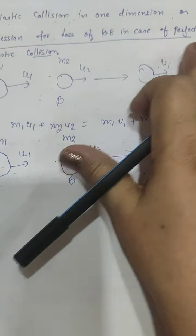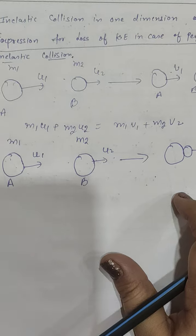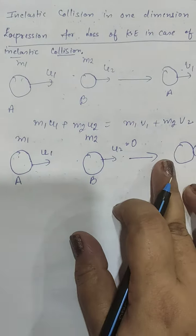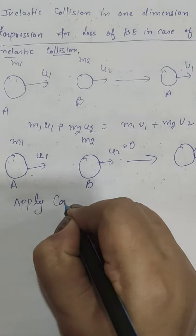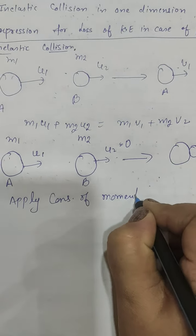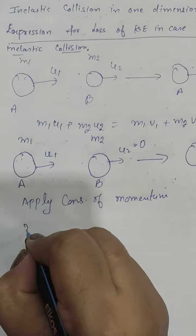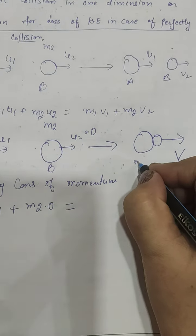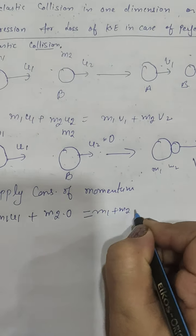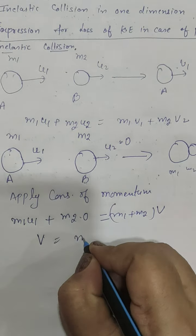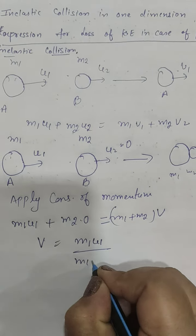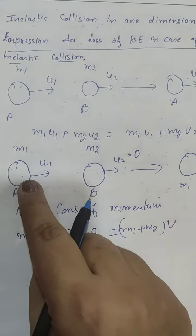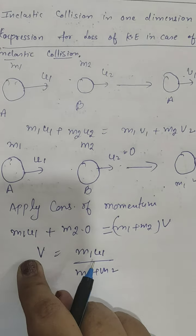Now let us find the expression for loss of kinetic energy in case of perfectly inelastic collision. Let us consider u2 is 0, that is body B is at rest. Applying conservation of momentum: initial momentum is m1·u1 + m2·0, which equals (m1 + m2)·v. Therefore, velocity v equals m1·u1 divided by (m1 + m2). Knowing the masses and initial velocity of body A, we can find velocity v after collision.